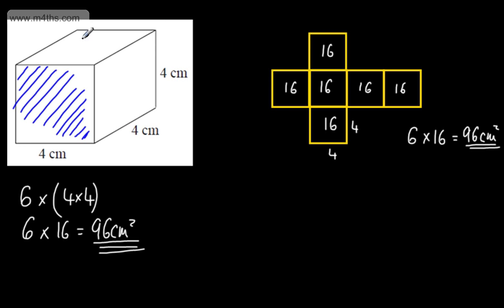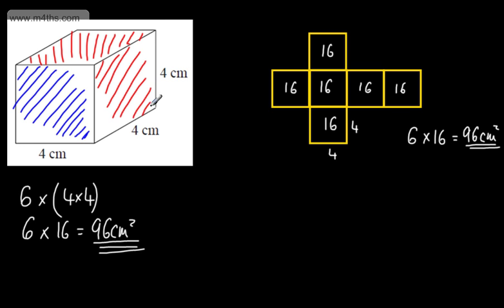When we're talking about the surface area, it's everything that we can touch on the outside. So the area of this particular face, this face, and then the three other faces — the one round this side, the one round that side, and the one underneath. Let's look at another shape.